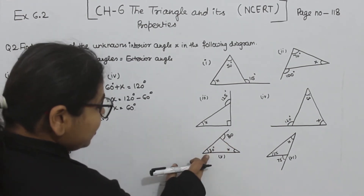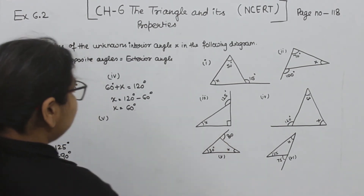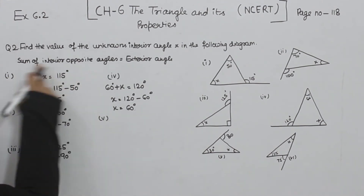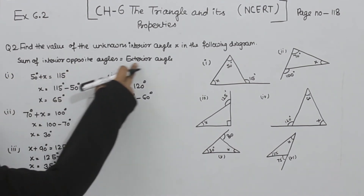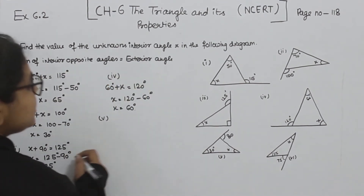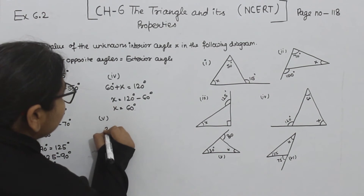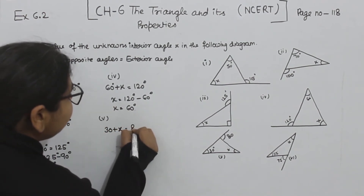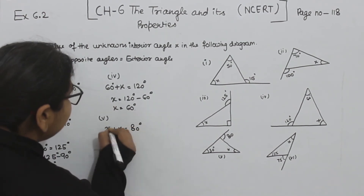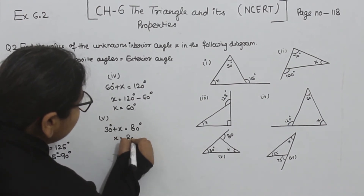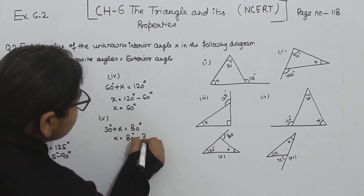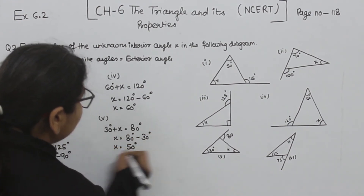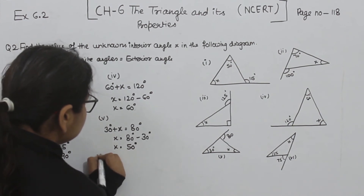Now comes part 5. In part 5, the exterior angle is 80 degrees and the interior opposite angles are 30 degrees and x. The sum of interior opposite angles equals the exterior angle: 30 plus x equals 80 degrees, so x equals 80 minus 30, giving x equal to 50 degrees.